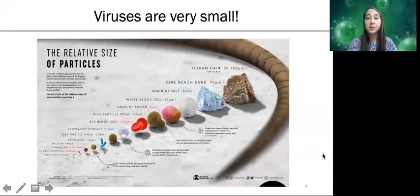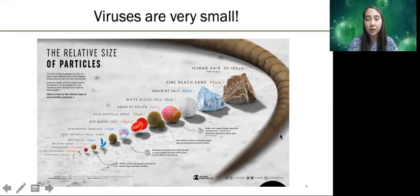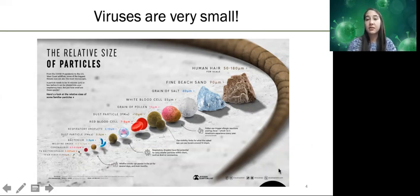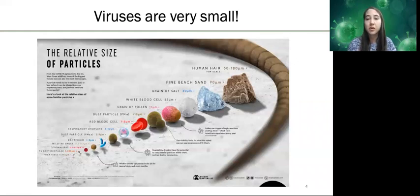Viruses are very, very small particles. Just to give you some context for scale, a human hair is around 4,000 times larger than most viruses. You can see a small virus here — Zika virus — and just a single human hair is 4,000 times larger than that virus. The vast majority of viruses cannot even be seen with a regular microscope, so in order to observe them, we have to use a more powerful technique called electron microscopy.